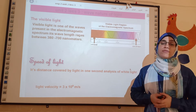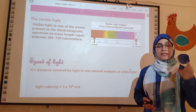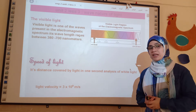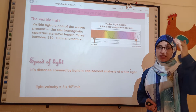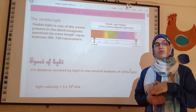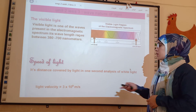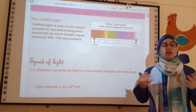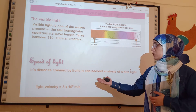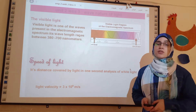What is the meaning of the speed of light? Speed of light, or the light velocity, is the distance covered by the light in one second. So, V equals d, which is distance, over t, which is time. And the light velocity in space or vacuum equals 3 times 10 to the power of 8 meters per second.